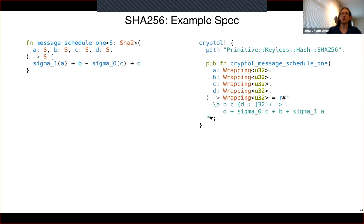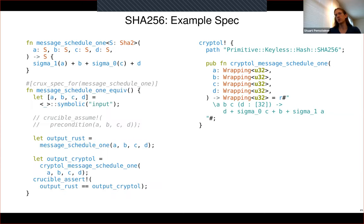Here's what the compositional proof looks like in practice. On the left is the Rust version of message_schedule_one; on the right are Cryptol bindings where the right-hand side is a lambda expression in Cryptol syntax. The signatures are equivalent once you specialize the Rust version with wrapping_u32 as the generic parameter. We write a test where we create symbolic inputs, call the Rust version, and assert that the output equals the output from calling the Cryptol version. The attribute on this test is not crux_test but crux_spec_for::message_schedule_one — which has two meanings: run symbolic execution to check the assertions succeed on all inputs, and also cause the tool to generate an override implementation for message_schedule_one based on the structure of this test case.